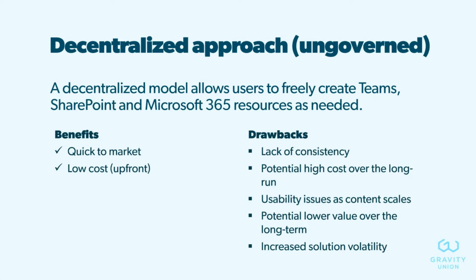The decentralized, ungoverned model allows users to freely create Teams, SharePoint sites, lists, and other resources to build their collaboration solution. Some benefits: it's quick to market, easy to launch, and can have lower upfront costs. However, the drawbacks we typically see include a lack of consistency — different naming conventions making things harder to find and search — and potentially higher costs over the long run as you clean up Teams, remove duplicates, and address sprawl.